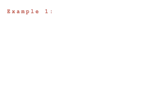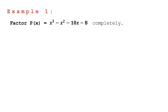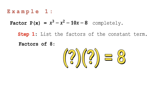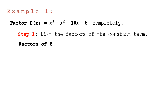For example one, let us factor p(x) = x³ minus x² minus 10x minus 8 completely. Step one: list all the factors of the constant term. Our constant term is 8. Think of two numbers that when multiplied give positive 8. The factors are: positive and negative 1, positive and negative 8, positive and negative 2, and positive and negative 4.